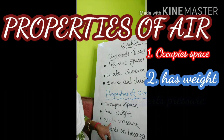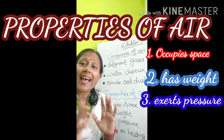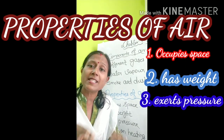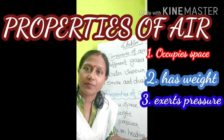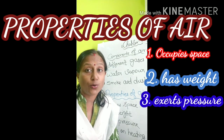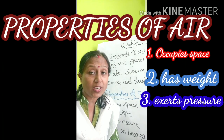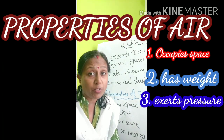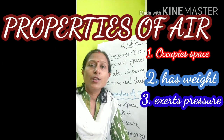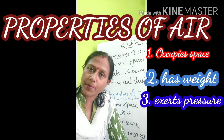The third property of air is that air exerts pressure. As air is present everywhere, and any weighty substance exerts pressure, the pressure which is exerted by air is known as atmospheric pressure. Atmospheric pressure is measured using a device called a barometer.